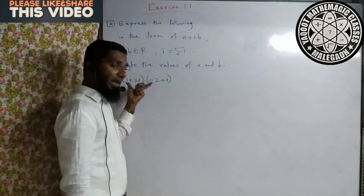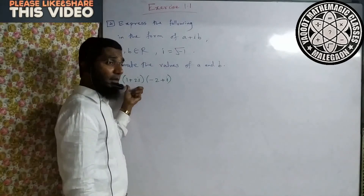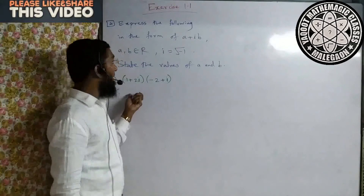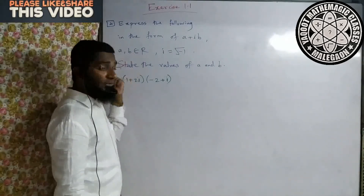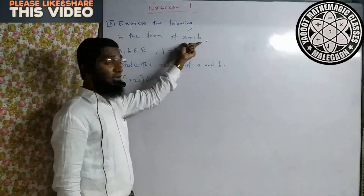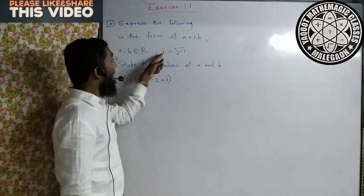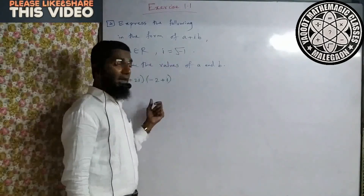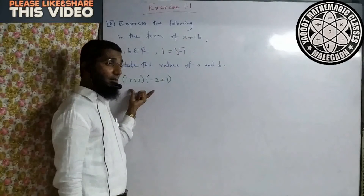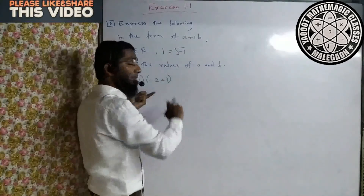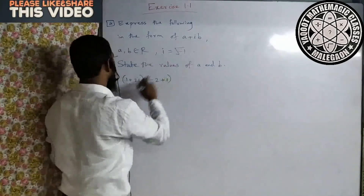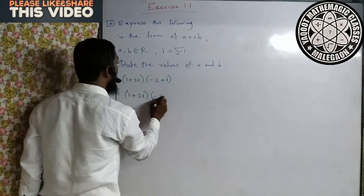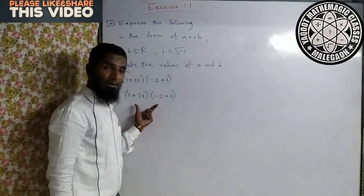Complex number ka multiply, addition, subtraction, ya division — jo bhi ho — aapko isko a plus ib ke form mein likhna hai, where a and b both are real numbers. i aapka root of minus one hai. State the value of a and b. Is form mein complex number ka multiply aa jayega toh a aur b bhi nikalna hai. (1 + 2i) ka multiply hai (−2 + i) se.